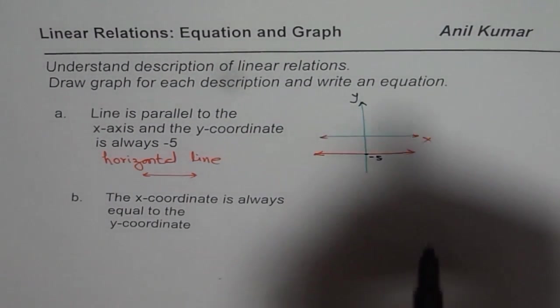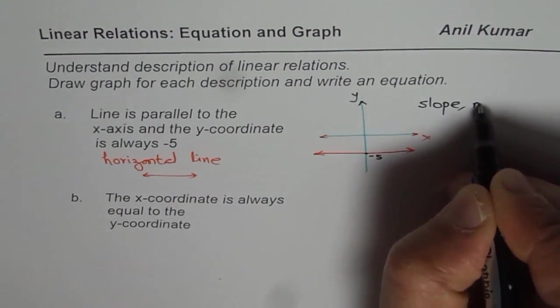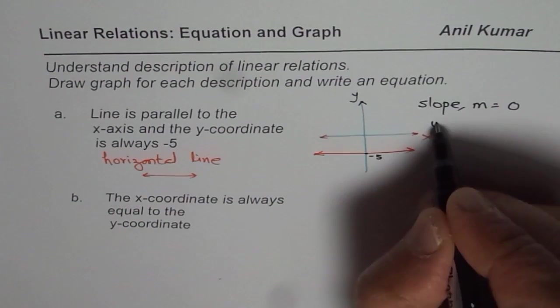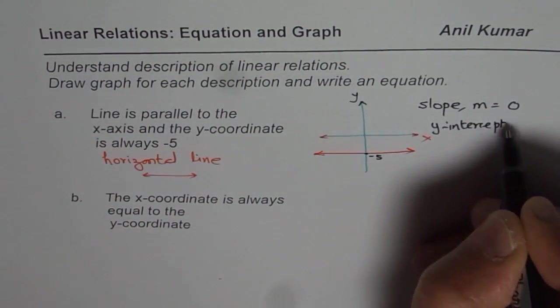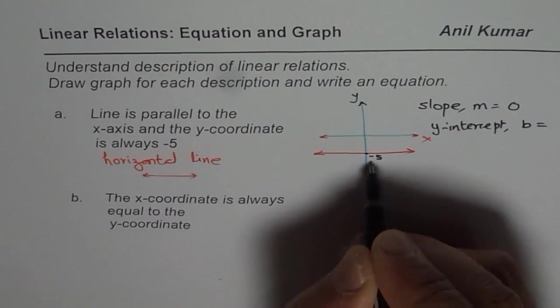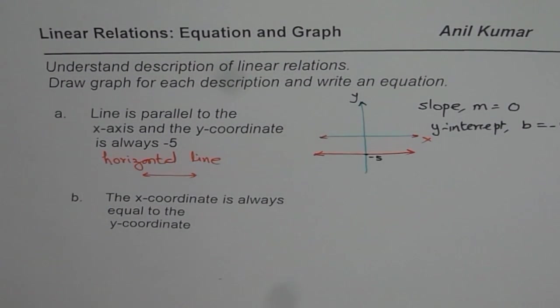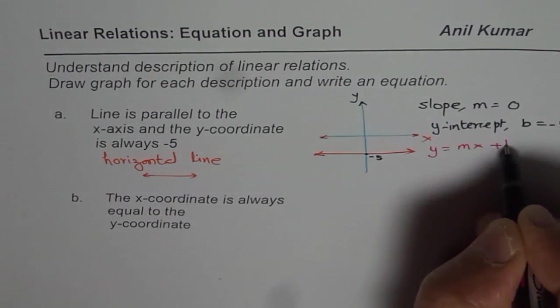Now, horizontal line has a slope of—we say slope m = 0 for a horizontal line. And here y-intercept is equal to minus 5.